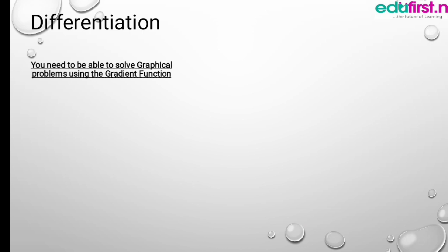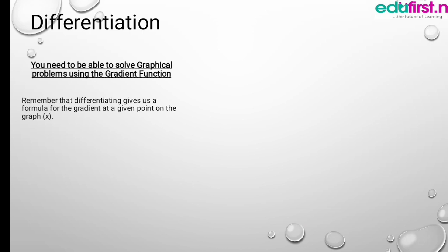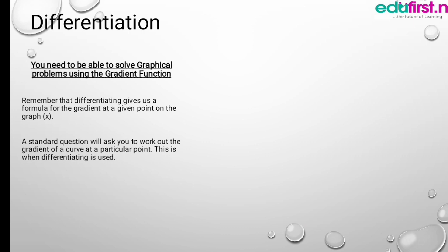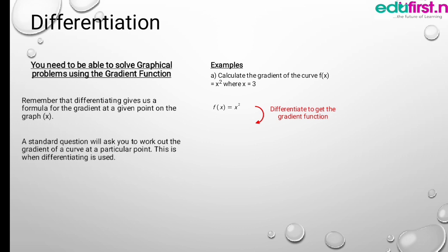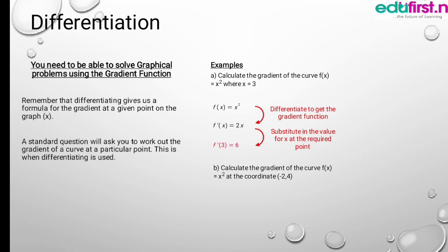You also need to be able to solve graphical problems using the gradient function. Remember that differentiating gives us a formula for the gradient at a given point on the graph. A standard question will ask you to work out the gradient of a curve at a particular point — this is when differentiating is used. Calculate the gradient of the curve f(x) equals x squared where x equals 3. Differentiate to get f'(x) equals 2x, then substitute x equals 3: f'(3) equals 2 times 3, which gives us 6.